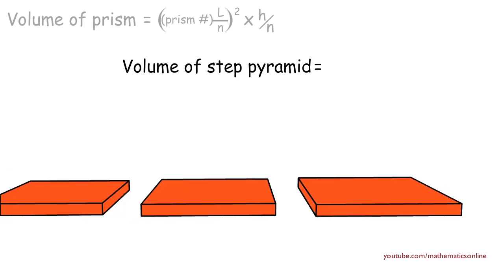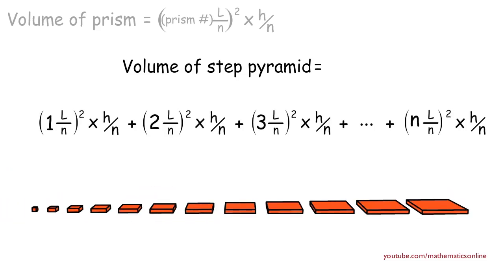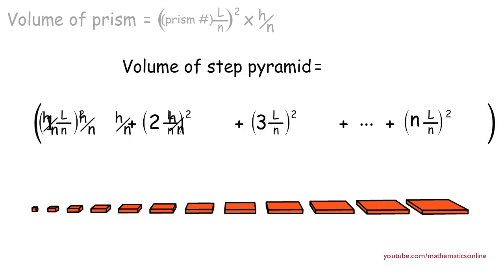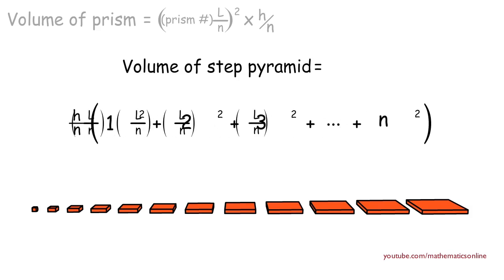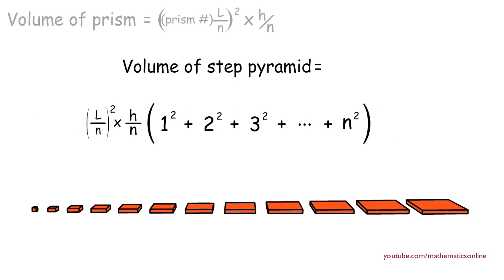Having added up all the prisms together, we have this complete formula to work with. Next we use algebra to factor out h/n and also factor out (l/n)². Therefore the volume of the step pyramid equals (l/n)² times (h/n) times the sum of integers squared.